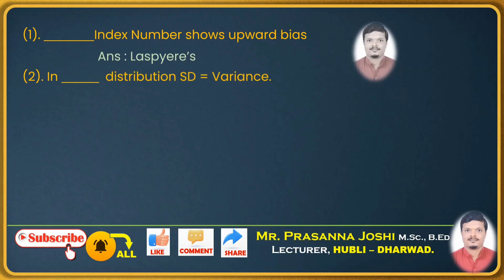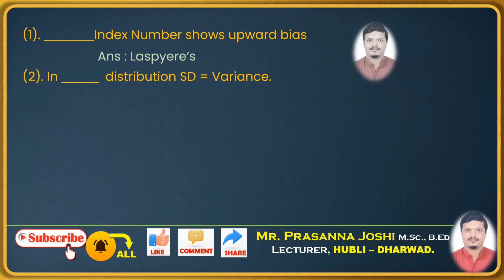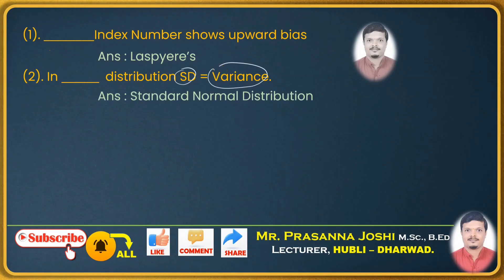Next: in dash distribution, standard deviation equals variance. This is from theoretical distributions. When standard deviation equals variance, the answer is standard normal distribution. If it had given mean equal to variance instead, we would have written Poisson distribution, but since it is standard deviation equal to variance, the answer is standard normal distribution.